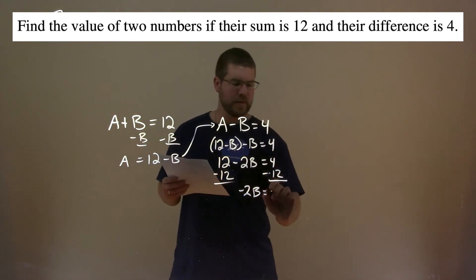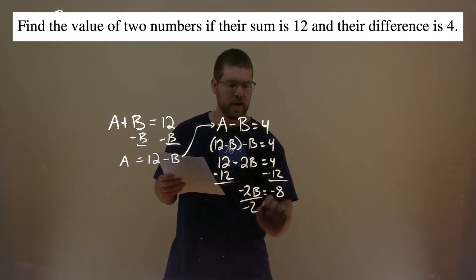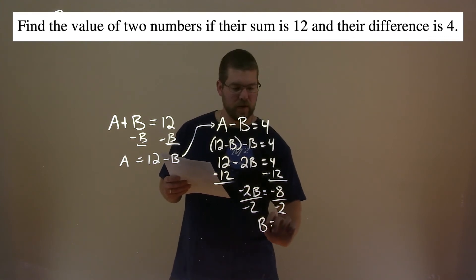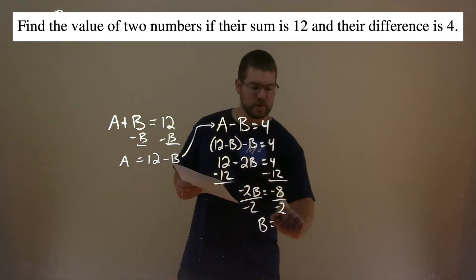4 minus 12 comes out to be negative 8. Divide both sides by negative 2. And B here becomes negative 8 divided by negative 2, which is a positive 4.